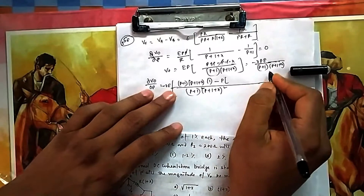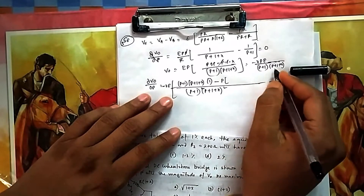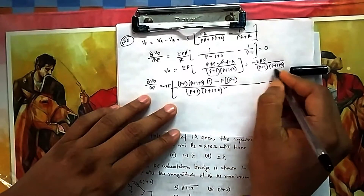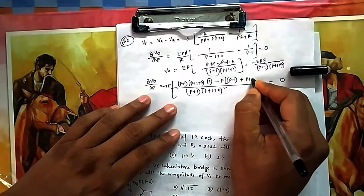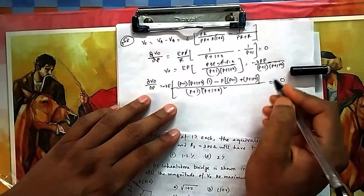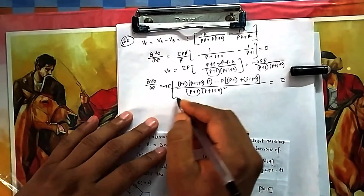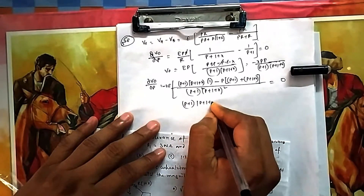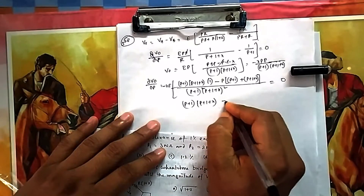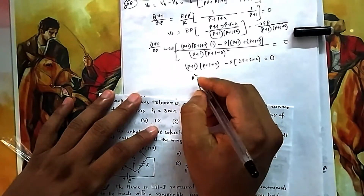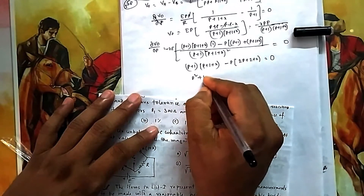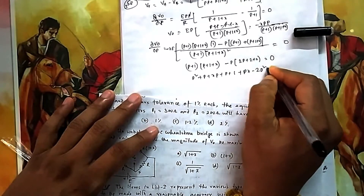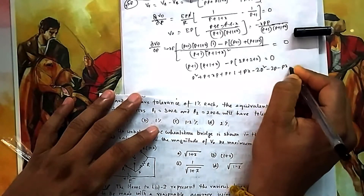Applying the quotient rule (u·v differentiation): differentiating the denominator — taking (p+1) constant gives 1, and taking (p+1+x) constant gives 1 — yields the differentiation of p+u·v applied. Opening the bracket finally gives: p² + p + xp + p + 1 + px minus 2p² minus 2p minus px equals zero.